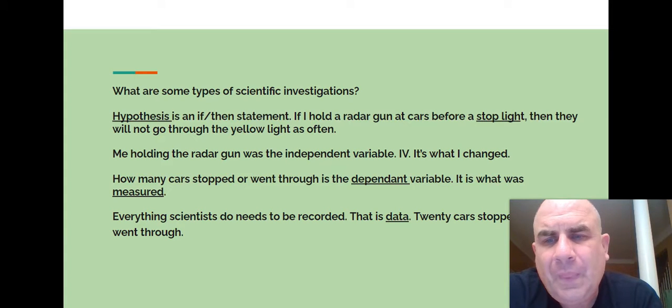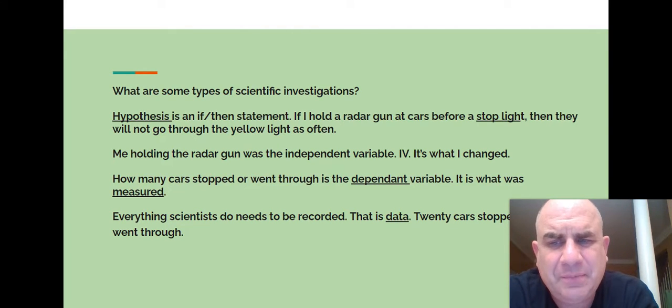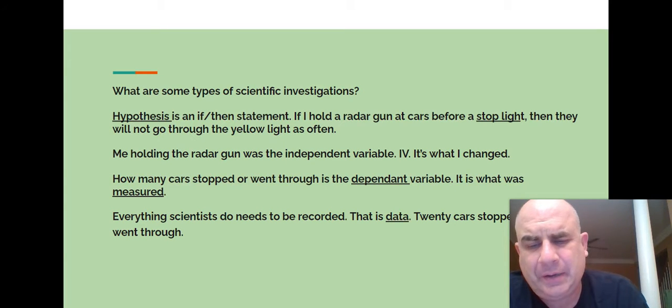So these are notes. If you were in my class last year, hypothesis is an if-then statement. If I hold a radar gun at cars before a stoplight, then they will not go through the yellow light as often. That was actually a video. I didn't include that video this time. Me holding the radar gun was the independent variable, IV. It's what I changed. How many cars stopped or went through is the dependent variable. It is what is measured. Everything scientists do needs to be recorded. This is data.